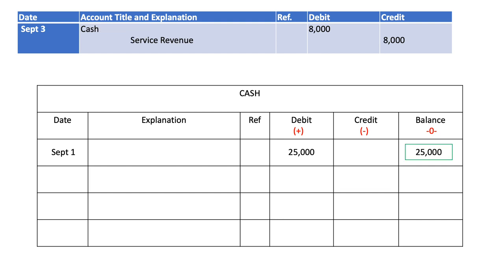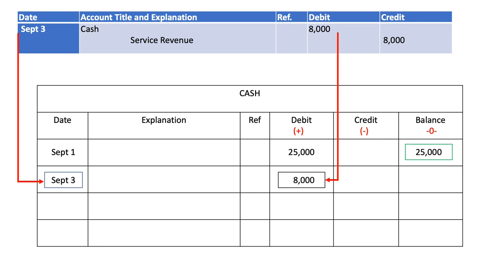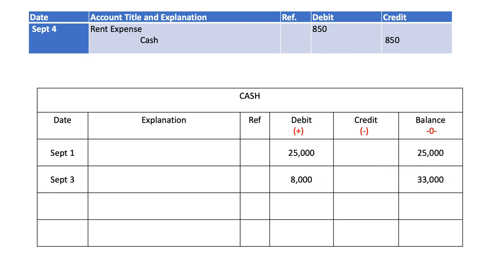The third transaction on September 3 is debit cash, credit service revenue. I have cash in the debit side, so I put the date September 3, add $8,000 to the debit side, then add $8,000 to $25,000 to get a new balance of $33,000.